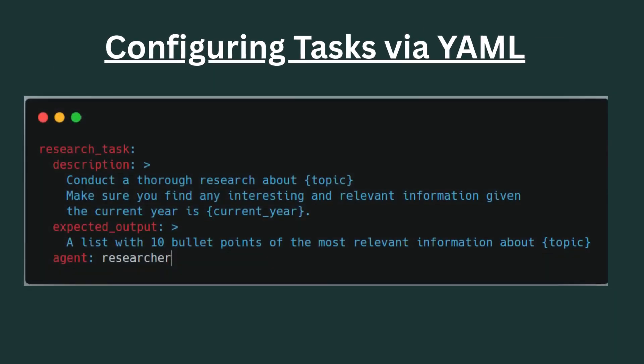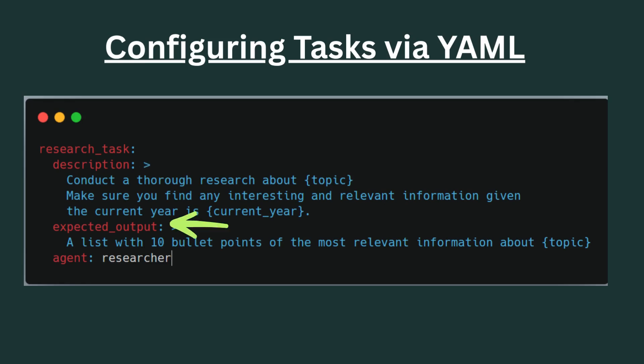All these different attributes need to be defined in our YAML file. Just like how we had the researcher agent earlier, we also define the tasks under the YAML file. Here we can see the research task — we have the description, expected output, and the agent.